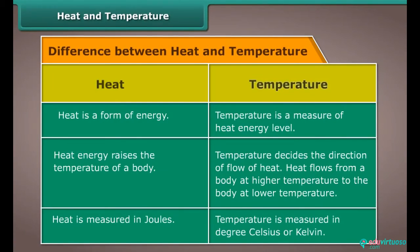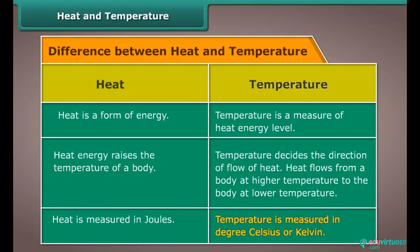The table shows the difference between heat and temperature. Heat is a form of energy; temperature is a measure of heat energy level. Heat energy raises the temperature of a body, while temperature decides the direction of flow of heat. Heat flows from a body at higher temperature to the body at lower temperature. Heat is measured in joules; temperature is measured in degrees Celsius or Kelvin.